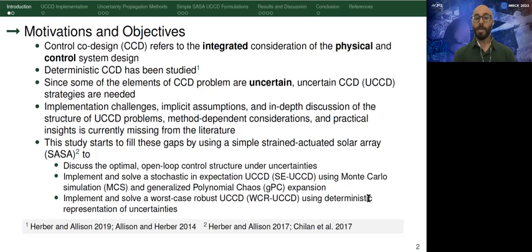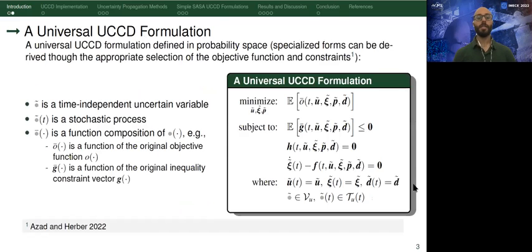Here you can see the universal UCCD formulation defined in probability space, that is without any loss of generality, because specific forms of this formulation can also be derived. Notice that all of the uncertain elements are described using tilde.